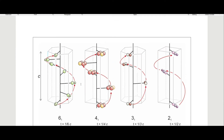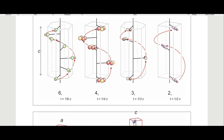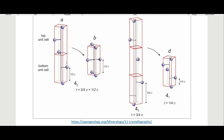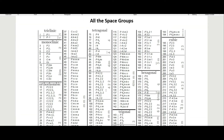Screw axes look like this: viewing along the axis, atoms circle around making a helix shape as you go along the central axis. There is a translation along the axis combined with a rotation. These occur at different fractions of the cell — t equals one-sixth of the cell, t equals one-fourth of the cell, and so on. You can have half-cell translations, three-quarter-cell translations, giving you many different new types of symmetry in your space groups.